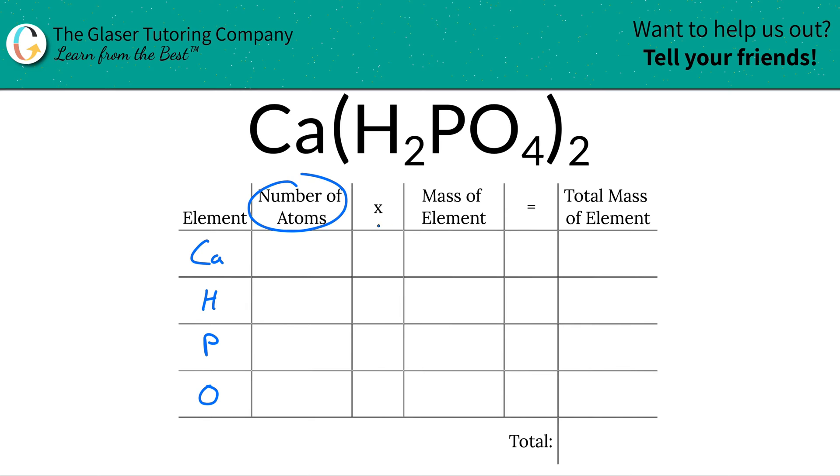Next is to consider the number of atoms of each element we have. There is a subscript of one here for calcium. So that means that calcium has one atom in calcium dihydrogen phosphate.